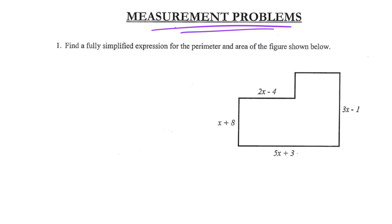I want to jump right in with the first problem on the screen. What I'd like you to do is find a fully simplified expression — find an expression and make sure it is fully simplified. We're going to do two things: find the perimeter of that shape, and then find the area of that shape. Since this is a cumulative day, I want you to try all of these problems on your own. Pause the video and give it a shot — let's start off with perimeter.